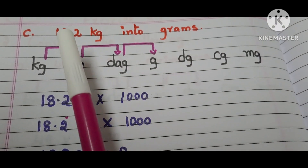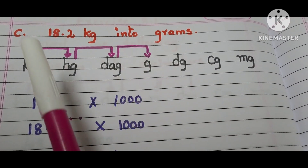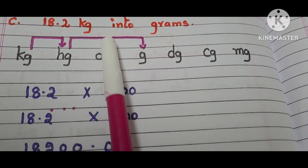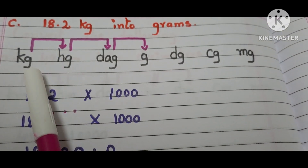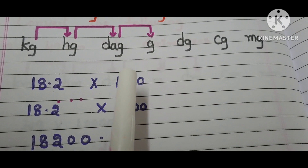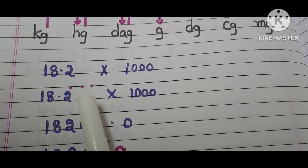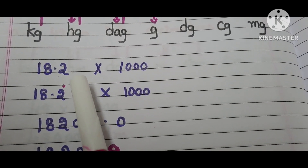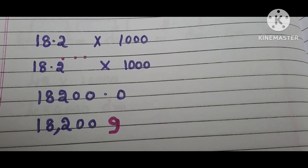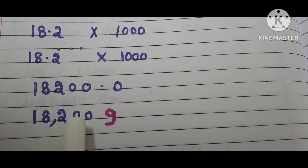Part (c): 18.2 kilograms into grams. The question is given in kilograms and we have to convert them into grams. Where are kilograms in the table? Here it is. Where are grams? Here it is. We move 3 steps from left to right, so we multiply by 1000. For 18.2 times 1000, since we are multiplying a decimal number by 1000, the decimal point moves 3 places to the right. Putting zeros in the empty places, it becomes 18200.0, which is 18200. The answer is 18200 grams.